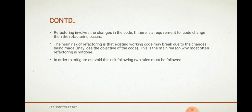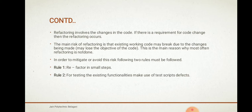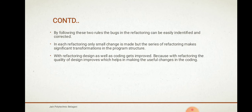To mitigate this risk, two rules must be followed. Rule 1: refactor in small steps — make changes to the code in small increments. Rule 2: use test scripts to test existing functionalities. By following these two rules, bugs introduced during refactoring can be easily identified and corrected. In each refactoring only a small change is made, but a series of refactorings makes significant transformations in the program structure. While refactoring, both design and coding get improved.